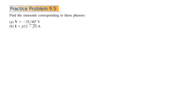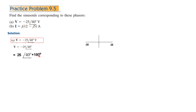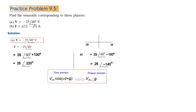Now for practice problem 9.5, we convert from phasors to sinusoidals. The phasor is negative, so we remove the negative by adding 180°. With −25° plus 180° we get 25∠220°, or subtracting 180° gives 25∠−140°. From here we directly convert into the time domain: 25cos(ωt + 220°) or 25cos(ωt − 140°). These are the same — adding 360° to −140° gives 220°.